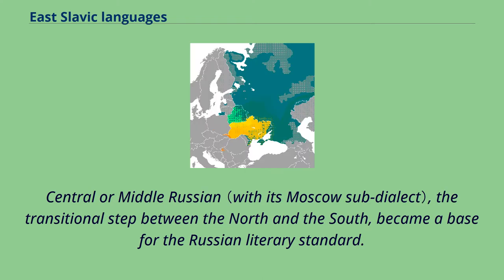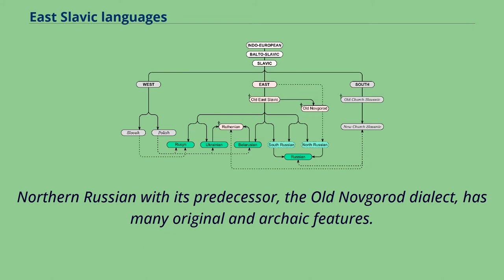Central or Middle Russian, the transitional step between the North and the South, became a base for the Russian literary standard. Northern Russian, with its predecessor the Old Novgorod dialect, has many original and archaic features.